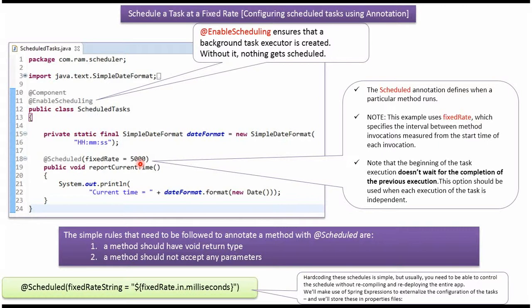Here 5 seconds is hard coded inside the code. We can externalize it to the property file and get this 5 seconds from the property file like this.